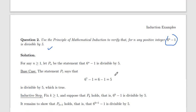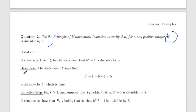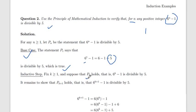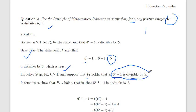Let's start. Base case: n = 1. Then 6¹ − 1 = 5, and 5 is divisible by 5, so the base case is true. Now suppose P(k) is true: 6^k − 1 is divisible by 5. We have to show that P(k+1) is also true — that 6^(k+1) − 1 is divisible by 5.